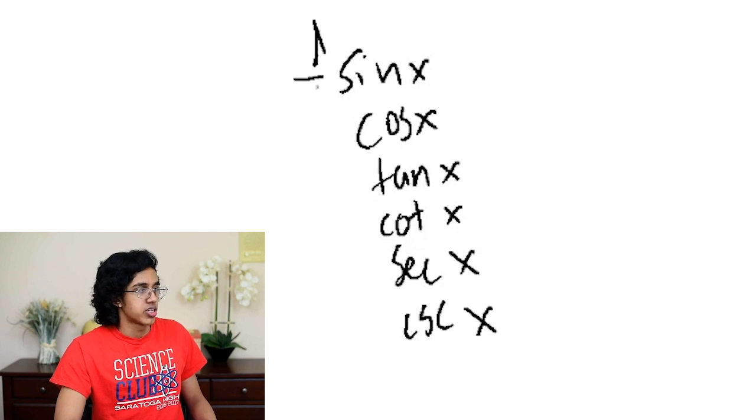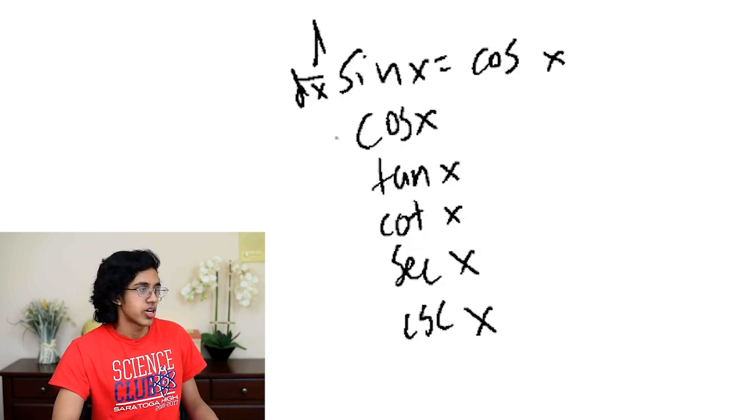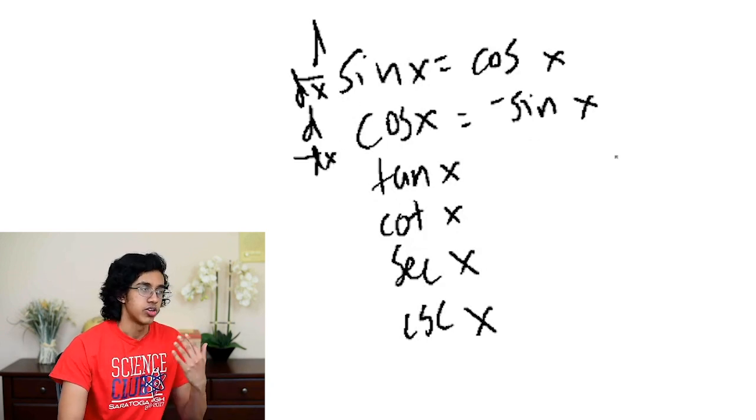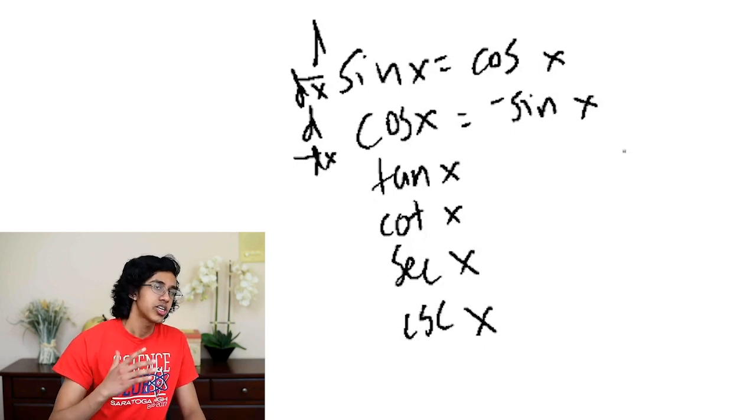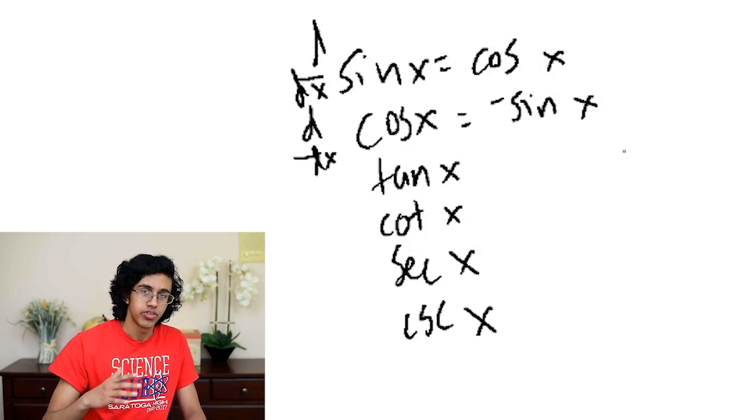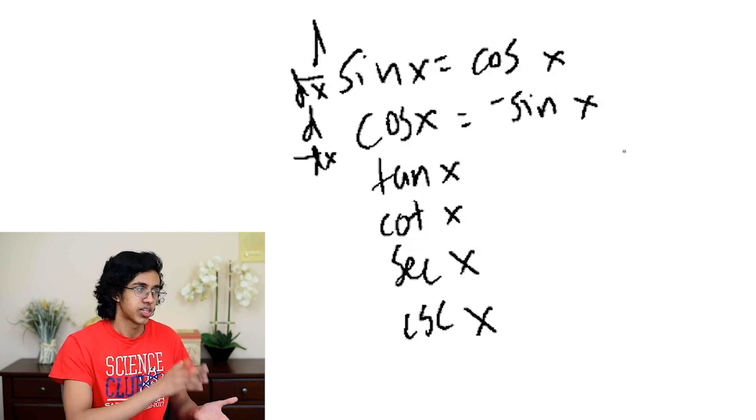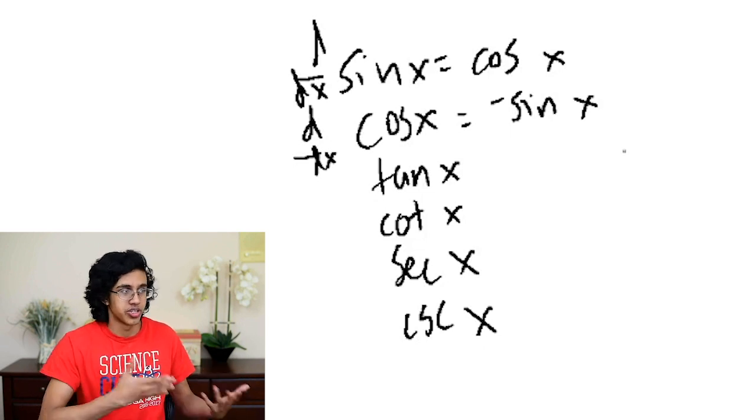So of course, if you take the derivative of sine, you get cosine. If you take the derivative of cosine, you get negative sine. Now, the easiest way to remember this is that essentially whenever you do trig derivatives, you want to flip the function. So in this case, you're going from sine to cosine, cosine to sine.